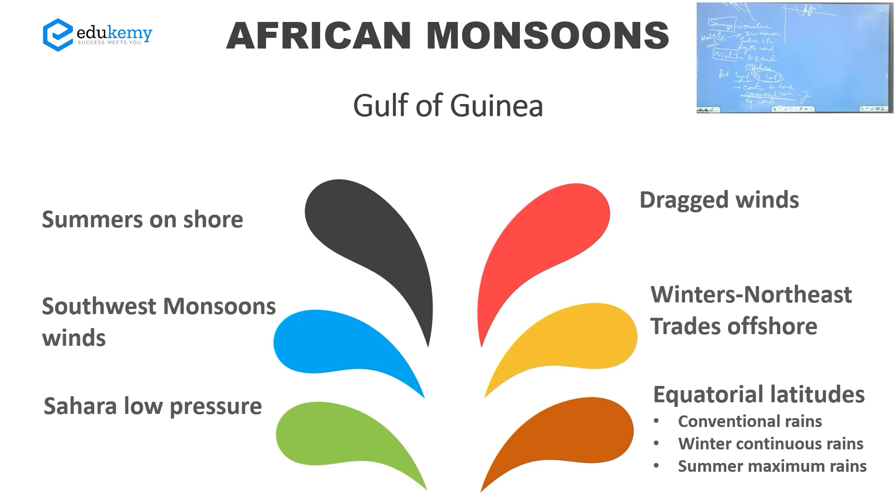So tell me, is the reversal good here with alternate wet and dry conditions? No. So reversal is not good, there is no strong seasonality. Winters have continued to have rains, although there is summer maximum rain. These are called as the pseudo-monsoons of Africa.